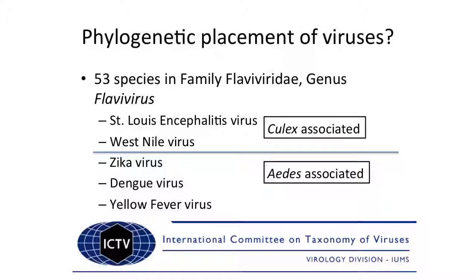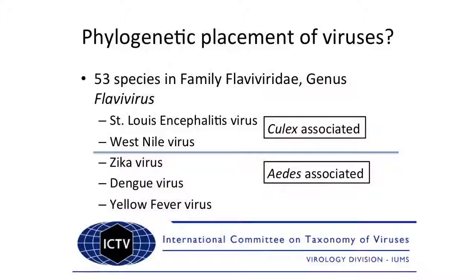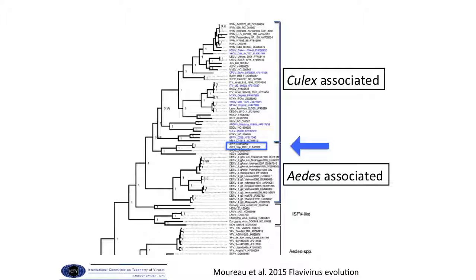There are 53 species of viruses in the genus Flavivirus, and some that you will recognize include St. Louis encephalitis, West Nile, Zika, Dengue, and yellow fever. The International Committee on the Taxonomy of Viruses stated that some of these are Culex-associated, and some are Aedes-associated - a division made back in 1987 before Zika was really doing anything. But embedded in the literature, Zika is Aedes-associated. A paper came out in 2015 looking at the evolution of the Flaviviruses, and they put Zika stuck in here just at the margin between the two groups.